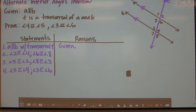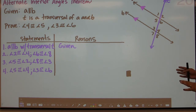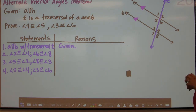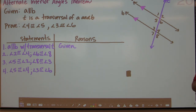Now we have another theorem — the Alternate Interior Angles Theorem. Remember that a theorem has to be proven; you can't assume it's true. I'm going to show you a proof of the Alternate Interior Angles Theorem. What I'm trying to prove is that alternate interior angles, like corresponding angles, are congruent. We have lines A and B parallel with arrows indicating such, and T is the transversal.